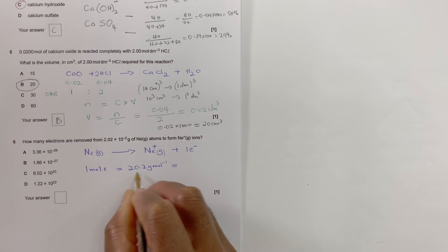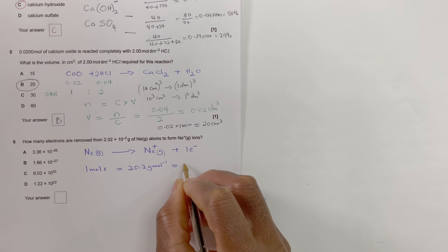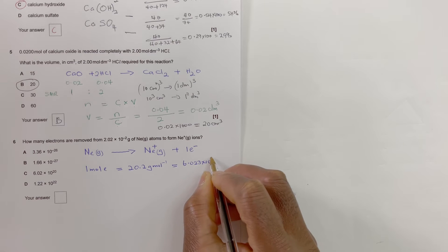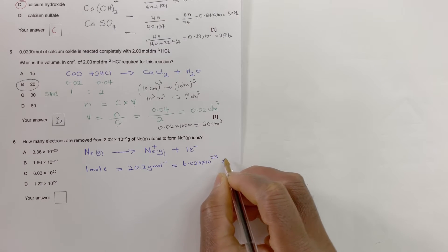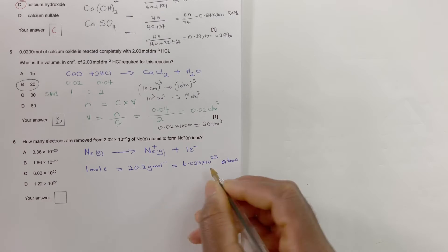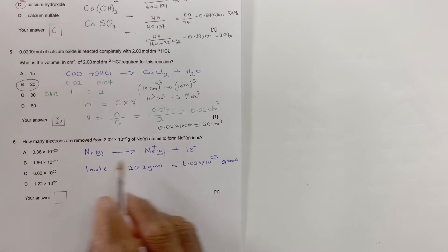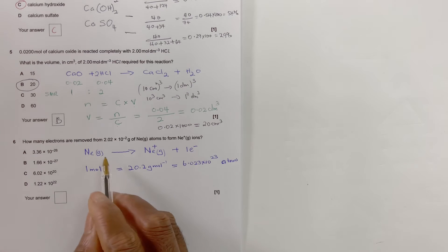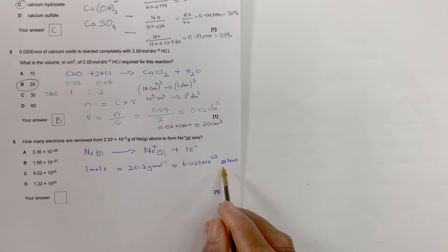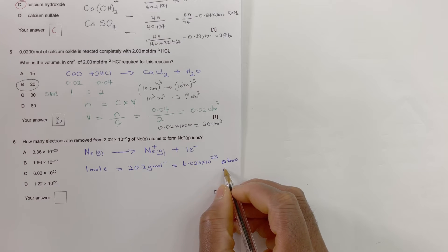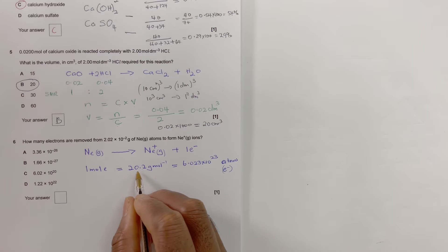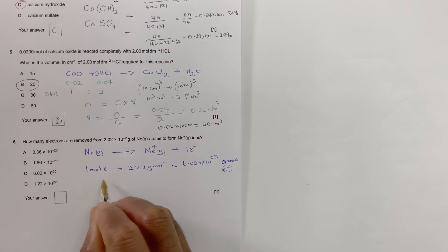One mole of neon, which is equivalent to 20.2 grams, will have 6.023 times 10 to the power 23 electrons — or atoms if you like. Think of it as one atom, but you've got that many atoms in one mole. We need to find the moles, because that gives us how many electrons you can remove.